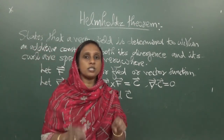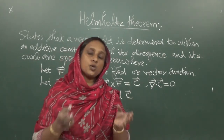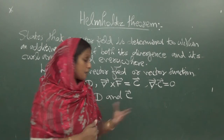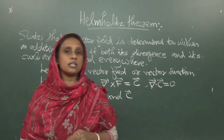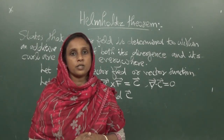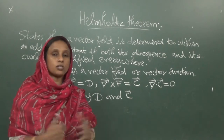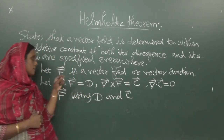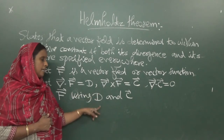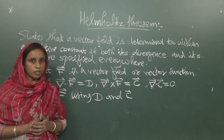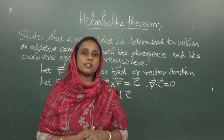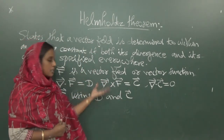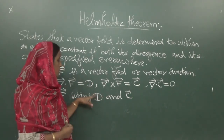If once we know the divergence and curl of a vector field, we can uniquely specify this vector field using the boundary conditions. In electrodynamics, we assume that the field vanishes at infinity. Along with this boundary condition, using D and C, you can uniquely specify the vector field F. This theorem is called Helmholtz's theorem, and there are certain implications connected with it.